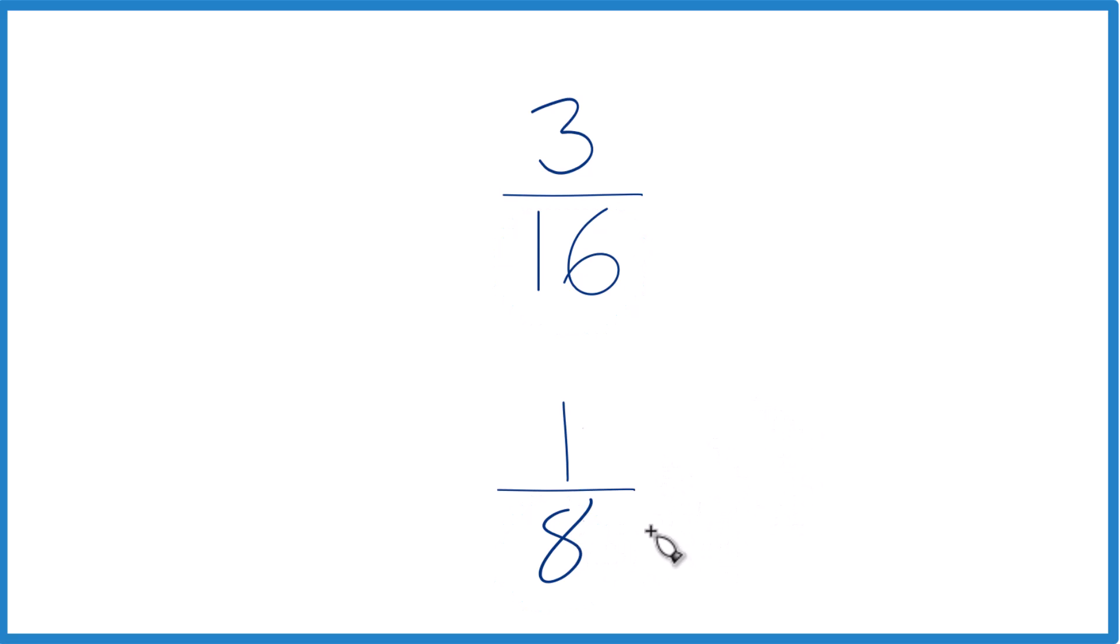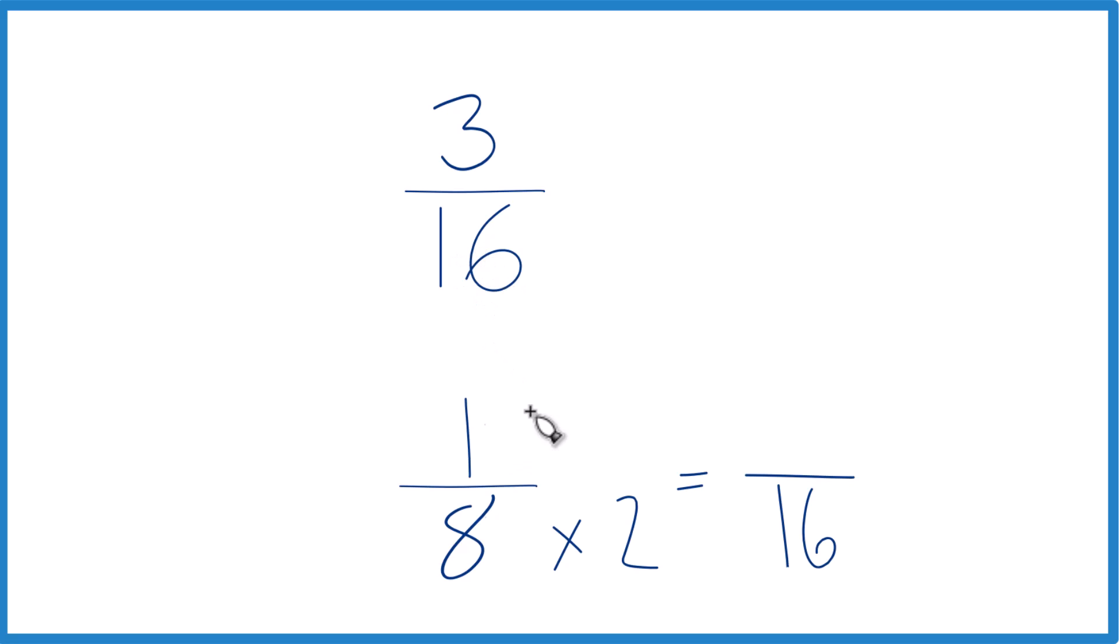And that's not too bad, because 8 times 2, that equals 16. And so we have 16 as our denominator here, we already have 16 over here. But if we multiply the denominator by 2, we also need to multiply the numerator.